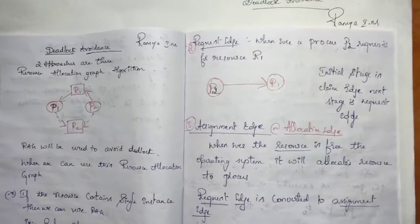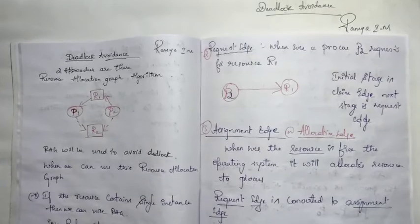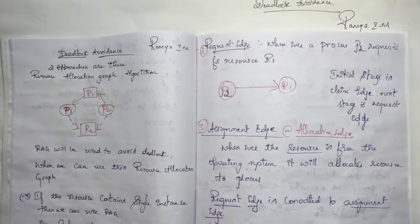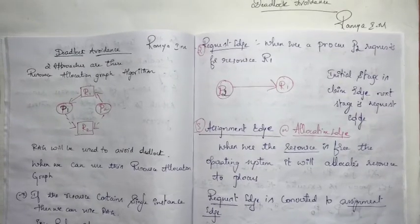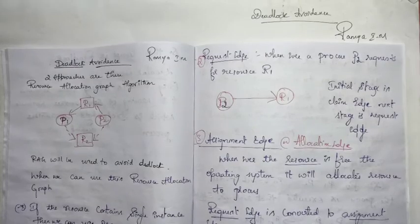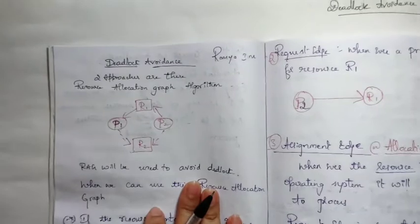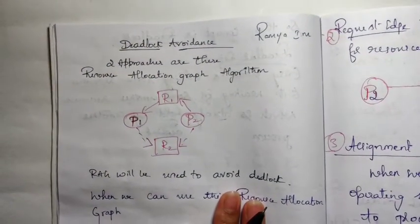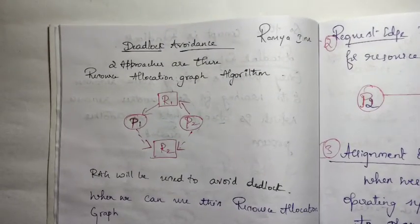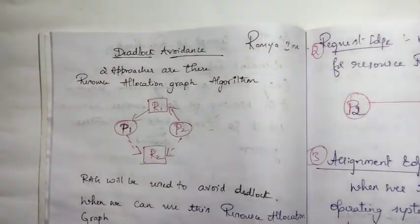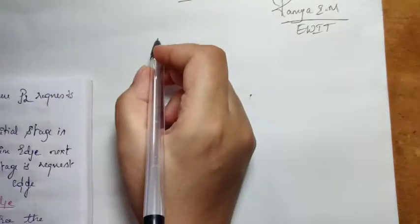In today's session we are going to learn how we can avoid deadlock. To avoid deadlock, two approaches will be used: if the resource contains a single instance, there will be a separate method, and if the resource contains multiple instances, there will be a separate method. In this session we are going to learn how to prevent deadlock when the resource contains a single instance.